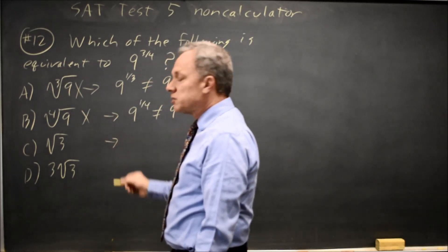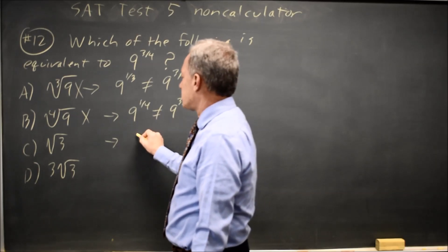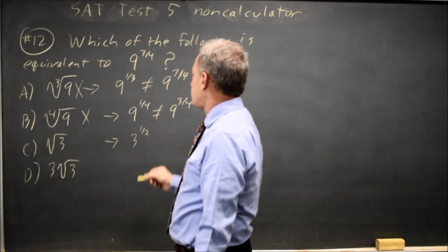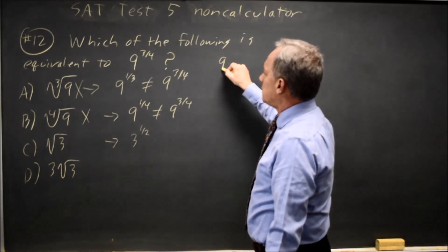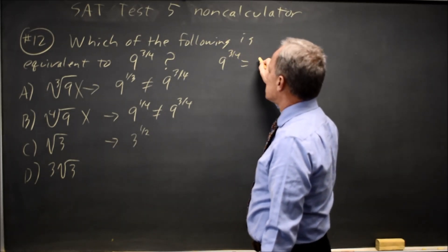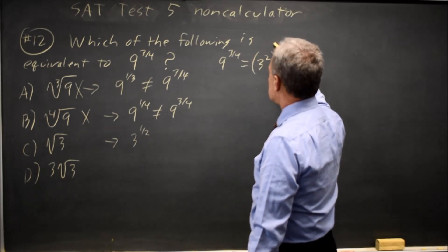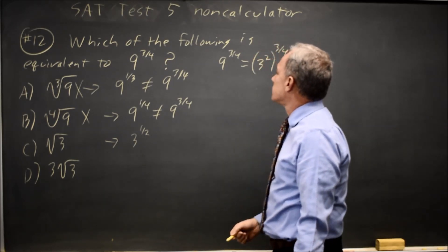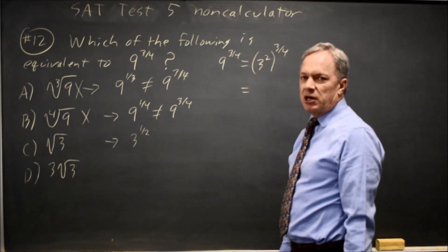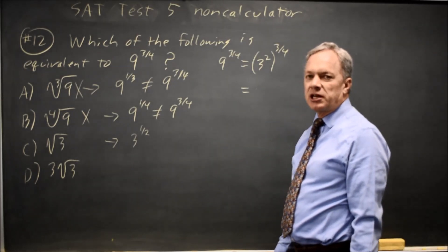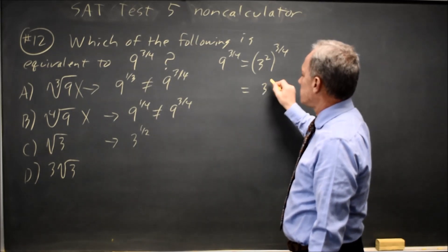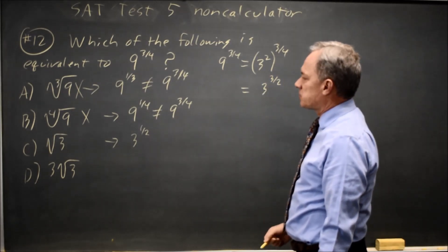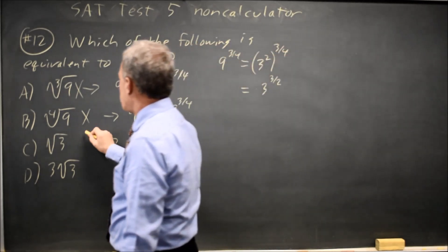Choice C, a square root is a one-half power, so that's three to the one-half. Let's write nine to the three-fourths as a power of three. Nine to the three-fourths is three-squared to the three-fourths because nine is three-squared. If you have a power of another power, you multiply exponents. So that would be three to the six-fourths, which is three to the three-halves. That is not three to the one-half.